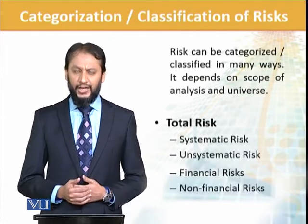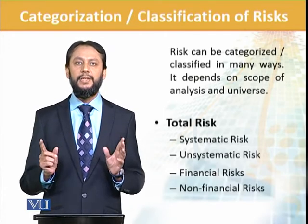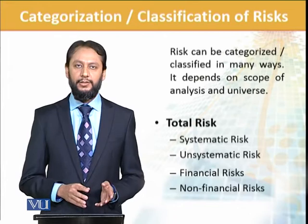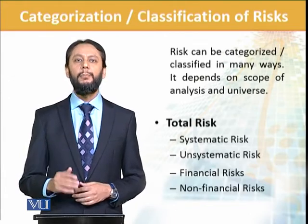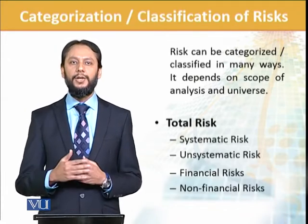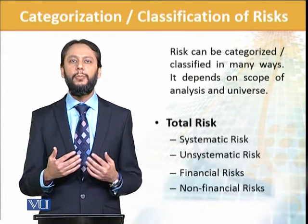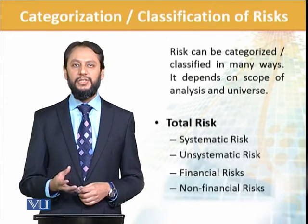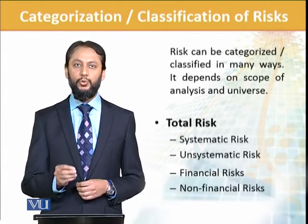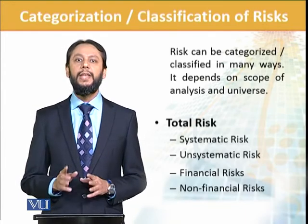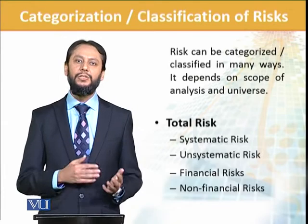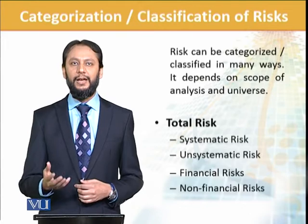Another way of classifying risk is through total risk. Total risk can be considered in different forms. Here we are talking about systematic risk and unsystematic risk, which we will study with graphs and figures later. For basic understanding, systematic risk is related to the financial market — how the financial market moves and what impact is normally expected on a particular share. Unsystematic risk is the specific or unique risk of a business. For example, if you are buying a textile company share, anything happening exclusively to that textile company is unsystematic risk, while anything happening to the market that affects the company's share is systematic risk. Similarly, we have financial risk as well as non-financial risk — multiple ways to classify and categorize these risks.